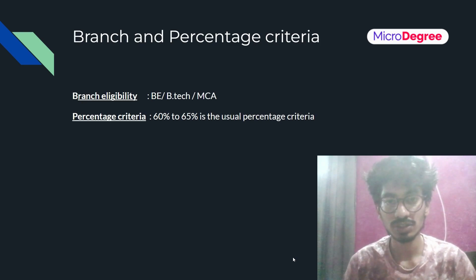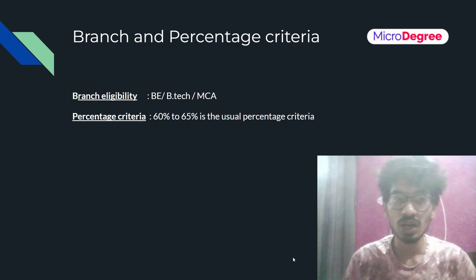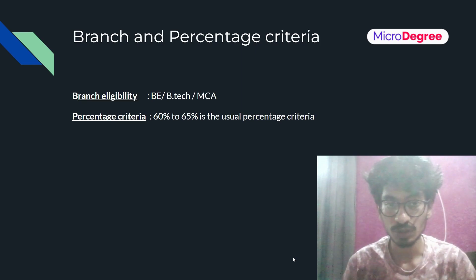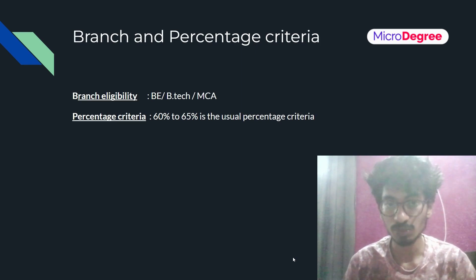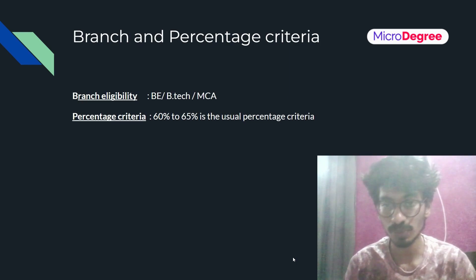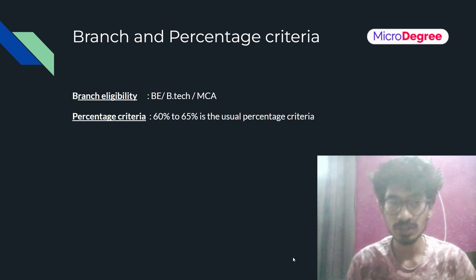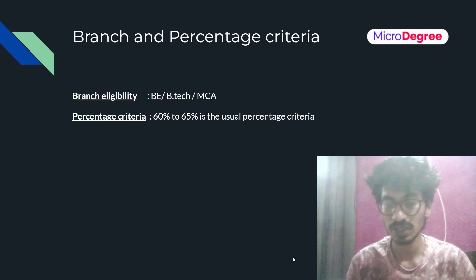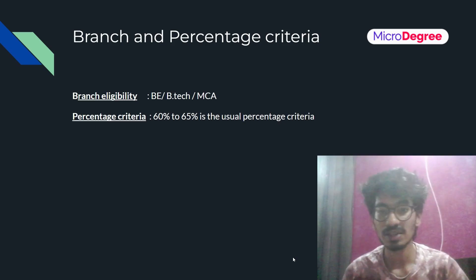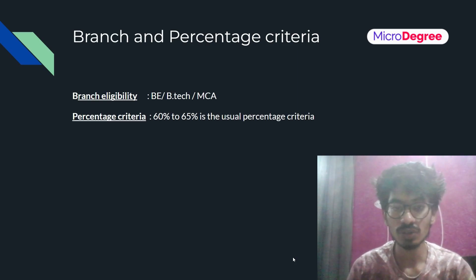There are percentage criteria depending on your branch. Students from around 100 branches can apply — including B.Tech and MCA students from each branch. The percentage criteria is 60 to 65%, and if you meet that, you can apply for the selection process.